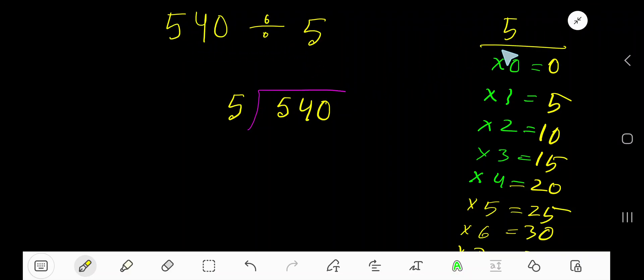540 divided by 5. 5 times 0 is 0, 5 times 1 is 5, 5 times 2 is 10, 5 times 3 is 15, 5 times 4 is 20, 5 times 5 is 25, 5 times 6 is 30. Okay, to find out the multiplication table of 5...